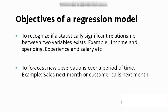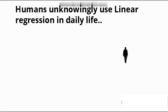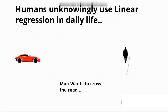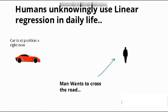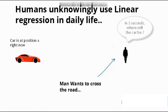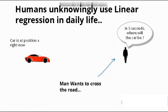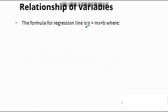The second objective is forecasting ahead of time. Humans also follow linear regression — suppose a man wants to cross a road; we calculate his current position and estimate where he will be in five seconds. The formula for the regression line is y = mx + b, where y is the dependent variable that we want to predict.